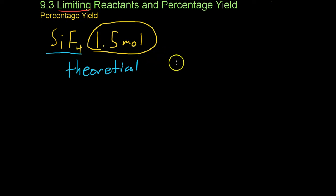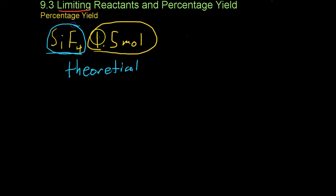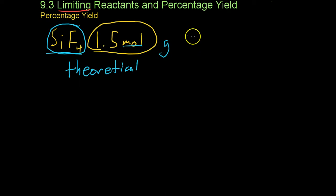What chemists measure is once they've completed a reaction and they've gotten to this product, they will often measure it out and find out how many moles or grams of product they've created. This is what's known as the actual yield.